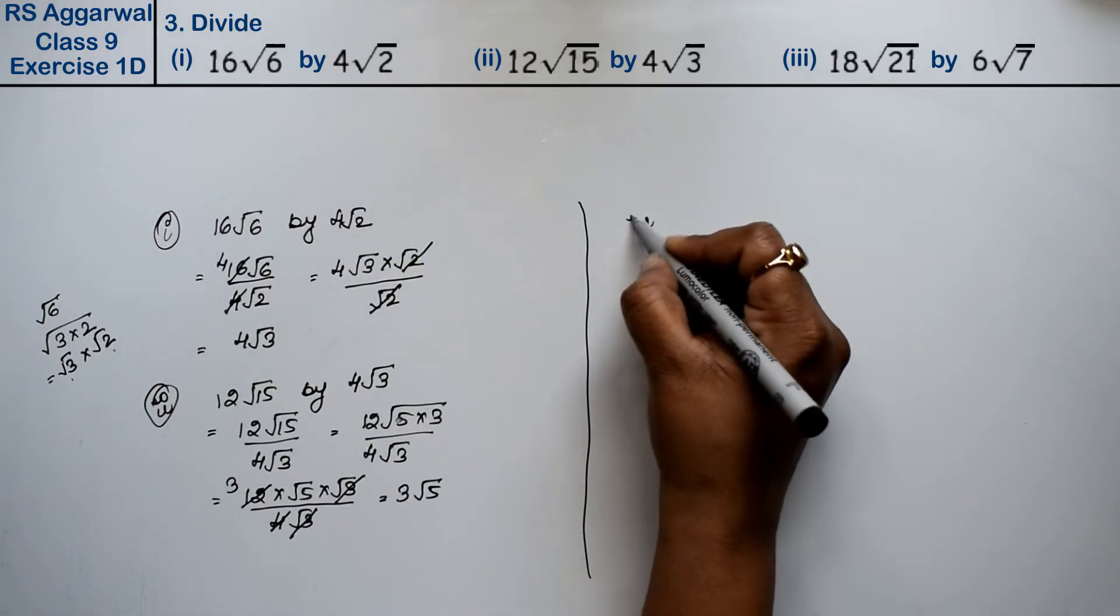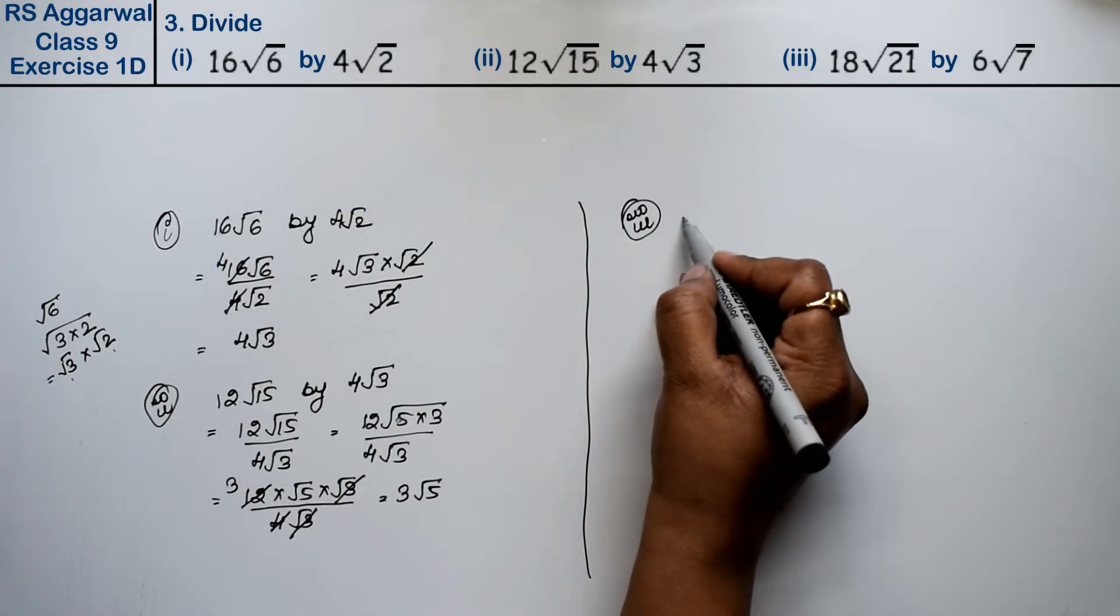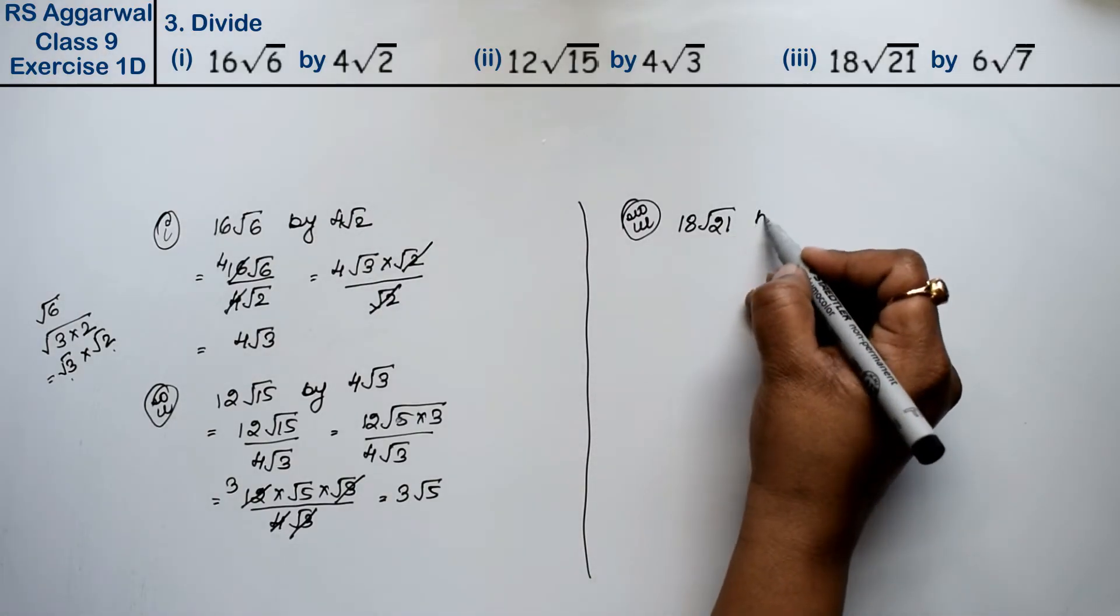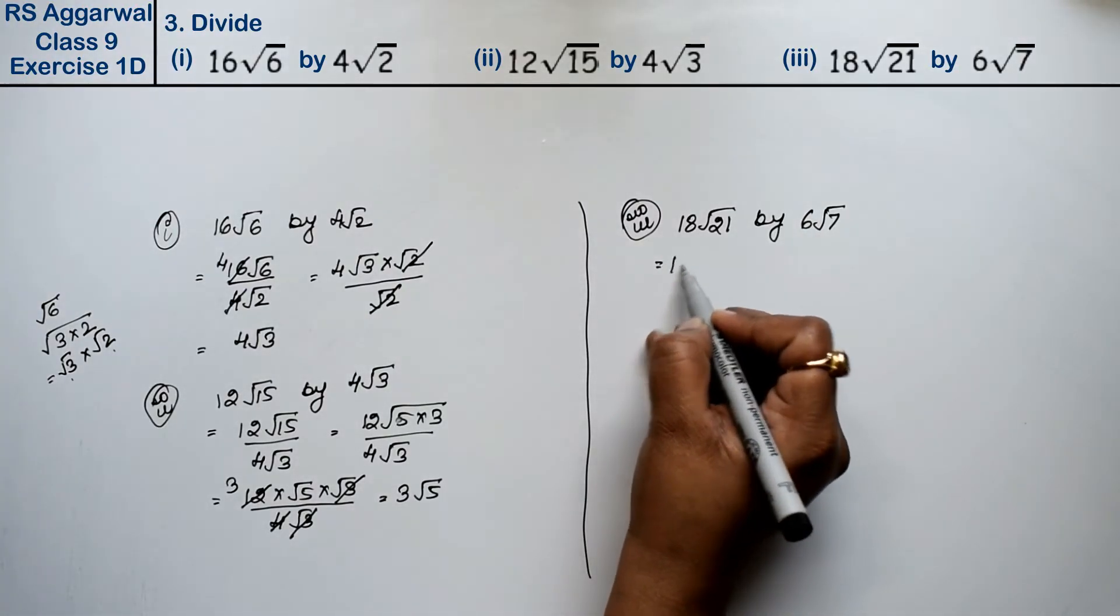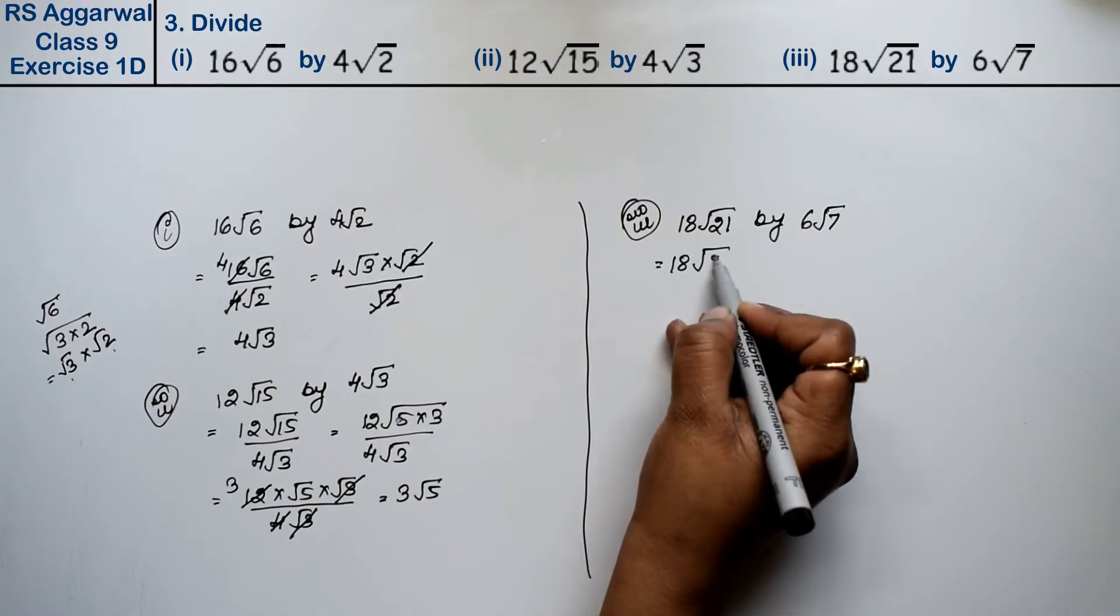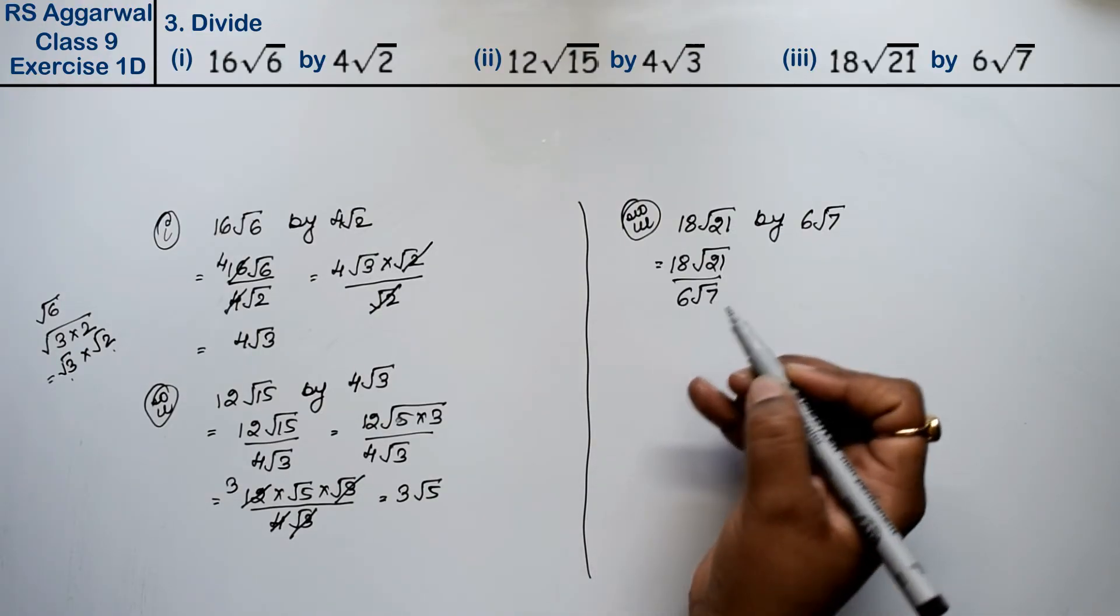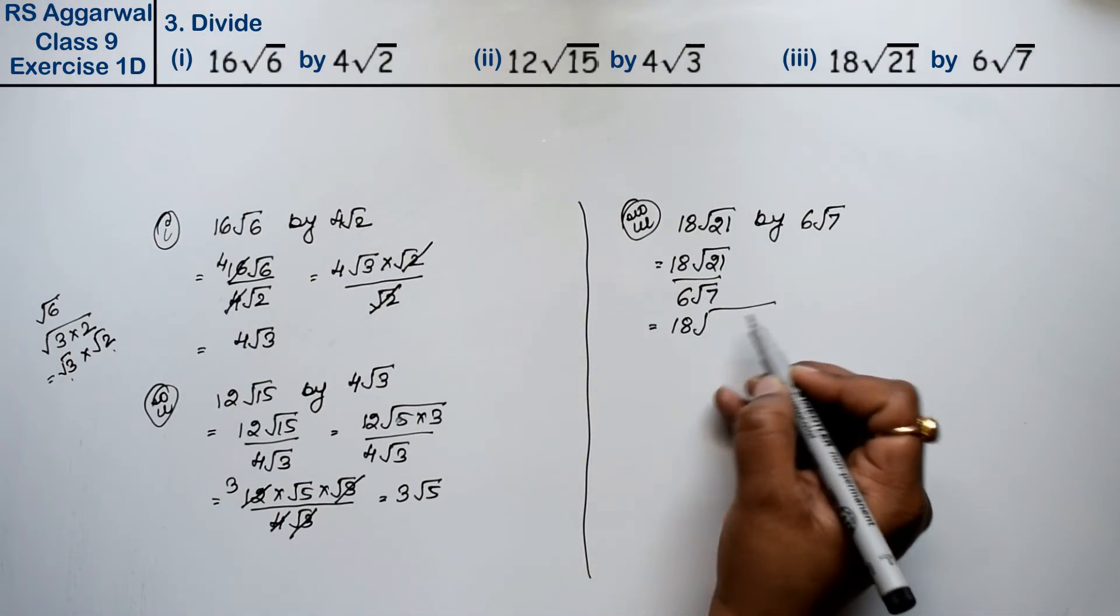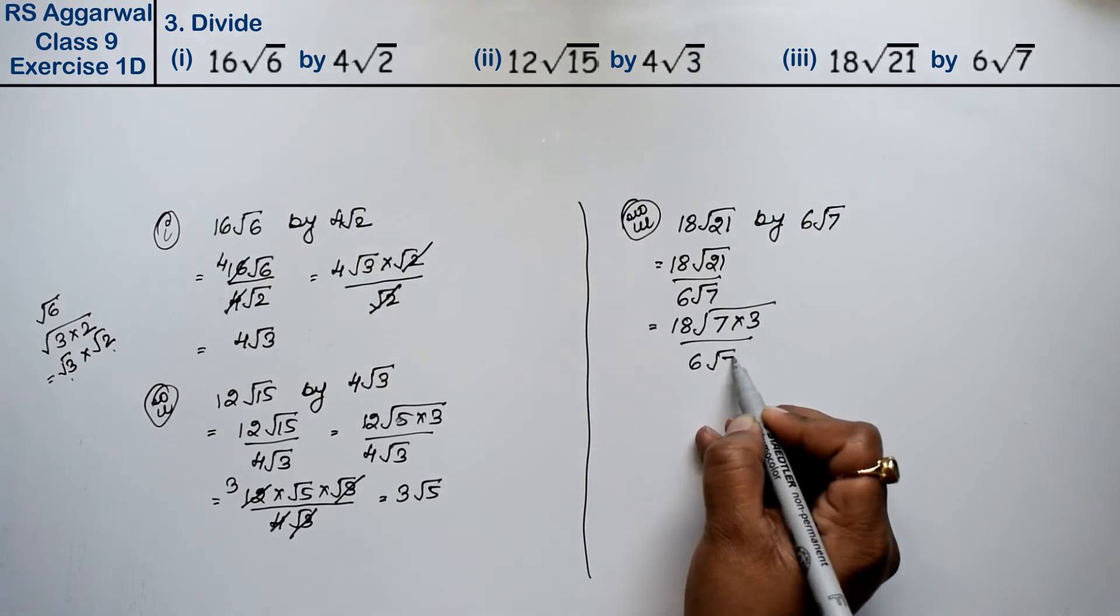Let's do the third part: 18√21 by 6√7. We know that 7 times 3 is 21.